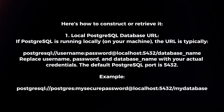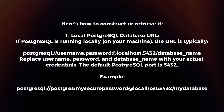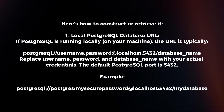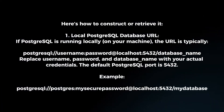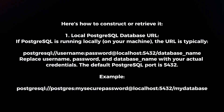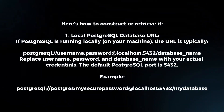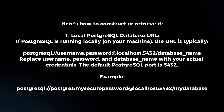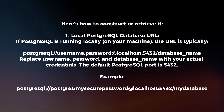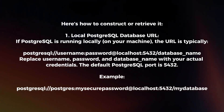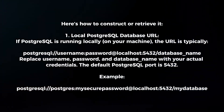Local PostgreSQL database URL: if PostgreSQL is running locally, the URL is typically the following. Replace username, password, and database name with your actual credentials. The default PostgreSQL port is 5432.